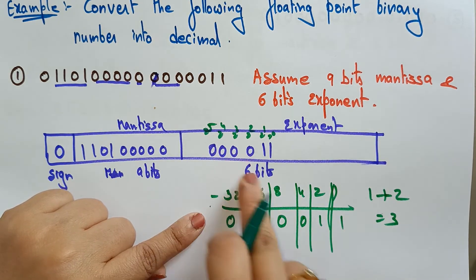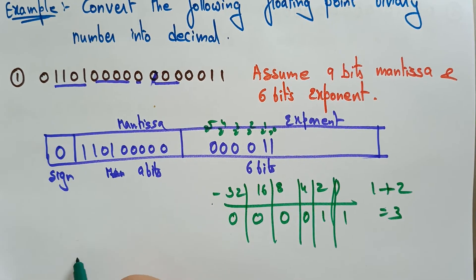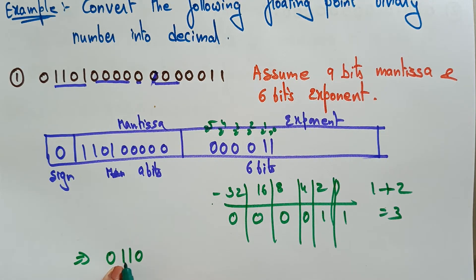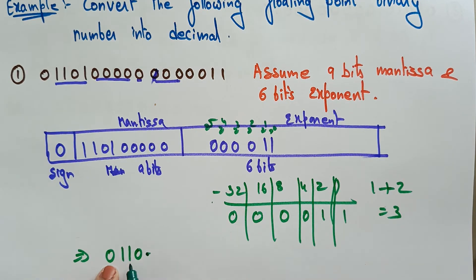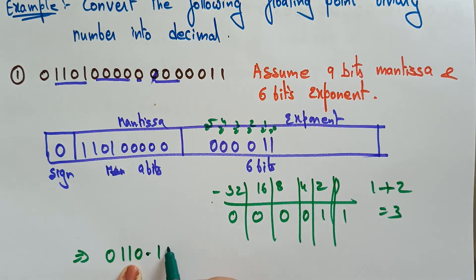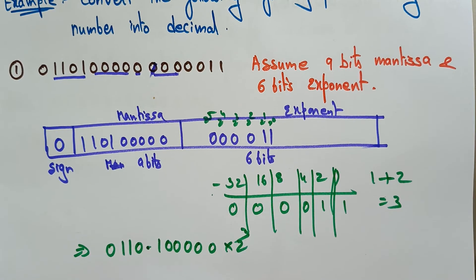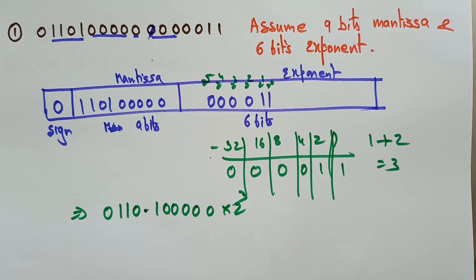The exponent is 3, meaning 2³. So we use the exponent to determine where to place the decimal point. The mantissa 0 1 1 0 . 1 0 0 0 0 0 0 multiplied by 2³ — this is still in binary floating point representation, now we need to convert it to a decimal fraction.